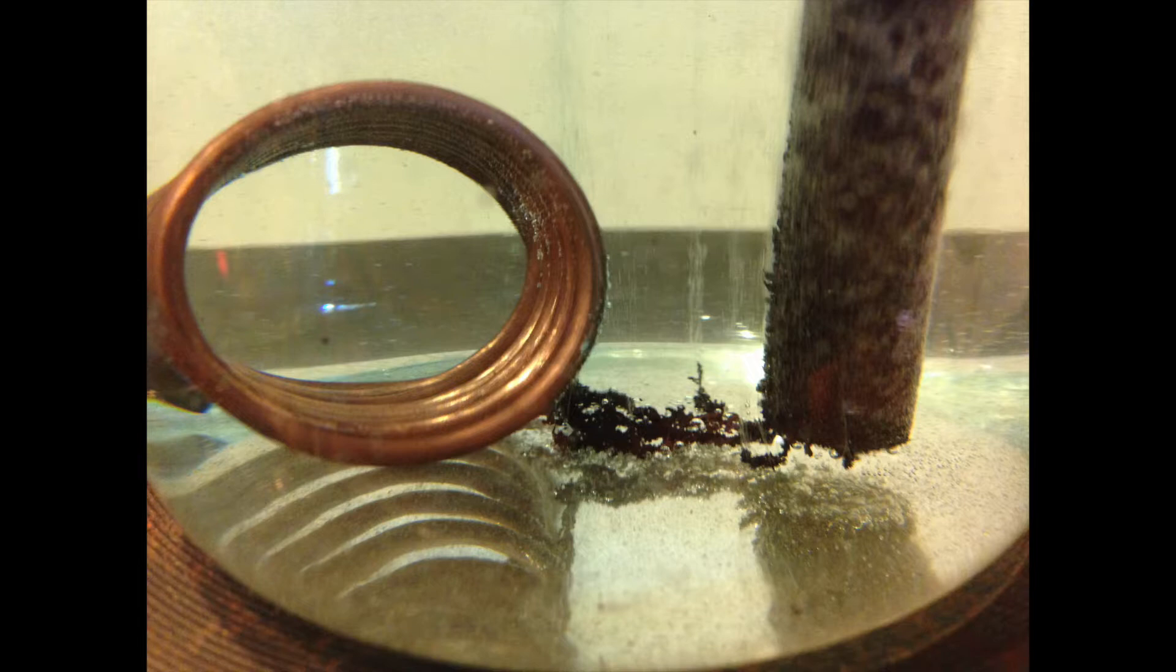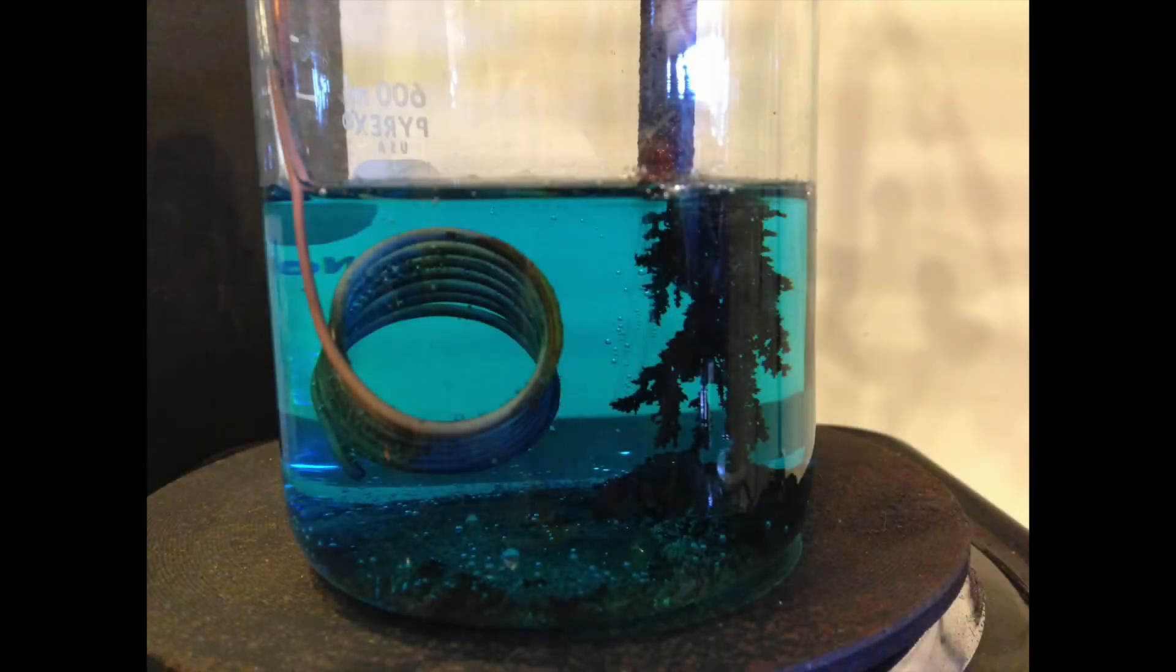I raised up the coil and the carbon rod so that it wouldn't be so easy for the dendrites to just crawl across the bottom of the flask and make a short circuit. This is what it looked like doing that.